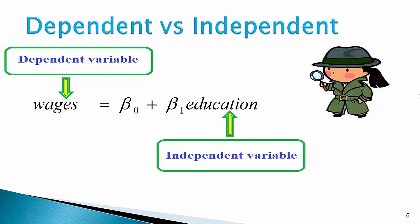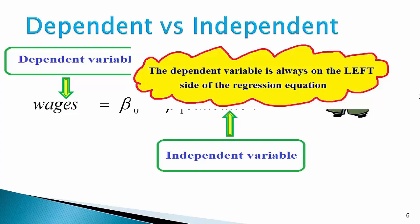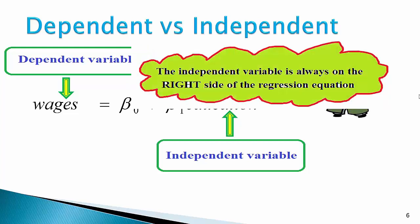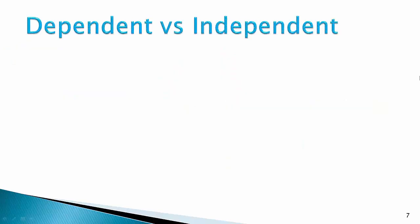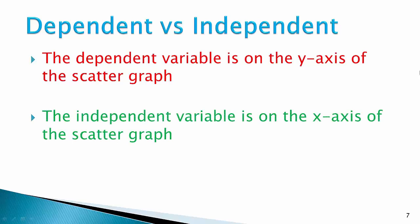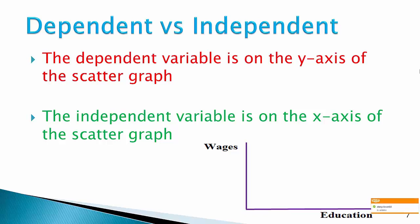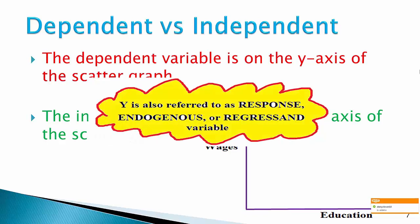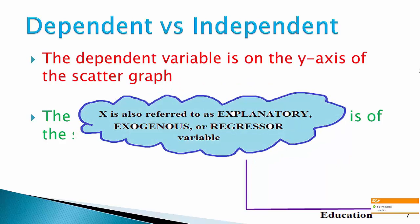So in this case, wages is the dependent variable as its values change according to education, and education is the independent variable as its values are independent of changes in wages. When setting up the regression equation, the dependent variable is always on the left side and the independent variable is on the right side. When displaying data on a scatter graph, the dependent variable is on the y-axis and the independent variable is on the x-axis. Depending on your textbook, the dependent variable can also be referred to as the response, endogenous, or regressant variable. Similarly, the independent variable can also be referred to as the explanatory, exogenous, or regressor variable.